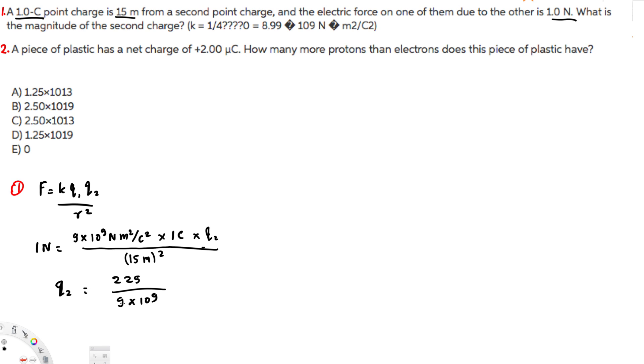Now we can find q2. So 9 times 25 is 225, so this is going to be 25 times 10 to the power of minus 9. So this is equal to 25 nano coulombs. That is the answer for the first question. First question, the answer is 25 nano coulombs.